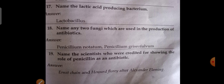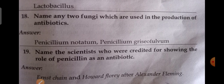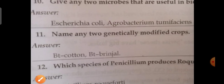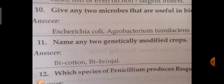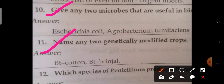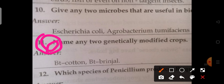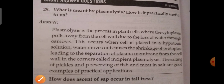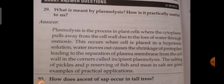Name any two fungi used in the production of antibiotics — the answer is Penicillium. This is also an important question. Next: give any two microbes that are useful in biogas production. Next: name any two genetically modified crops — Bt cotton and Bt brinjal. This is important. According to the question paper, this is the answer.